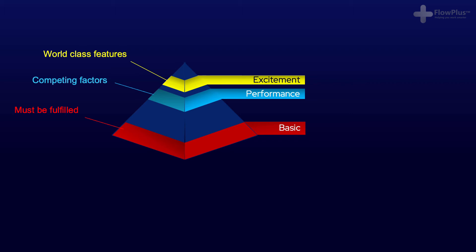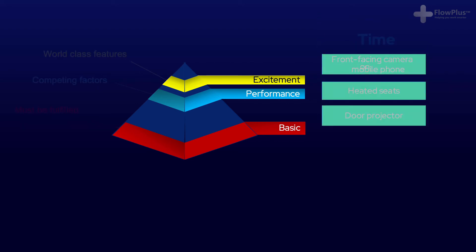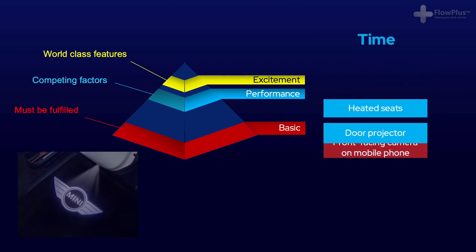The final point I would like to stress with the Kano model is that it is a dynamic model where features cascade down in time from excitement needs to performance needs and finally to basic needs. If you think back to Sony introducing the front-facing camera on a mobile phone in 2003, at the time that was a real excitement need and customers thought of it as going above and beyond. Move on to today and it's expected that a mobile phone has a front-facing camera — it has become a basic customer need.